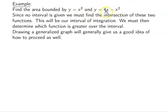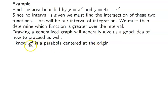An easy way to do this is to draw a graph. Using our knowledge of quadratics, I know x² is a parabola centered at the origin, concave up — like a bowl. For 4x − x², the negative term is in front of x², so it's also a parabola but concave down. One is like a mountain, the other like a valley.